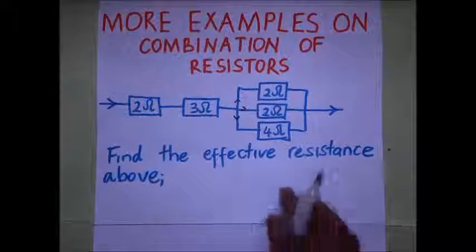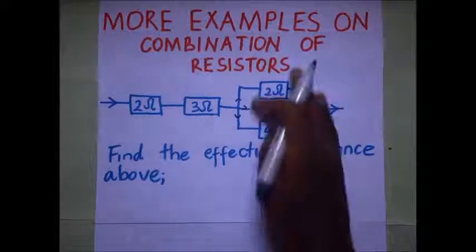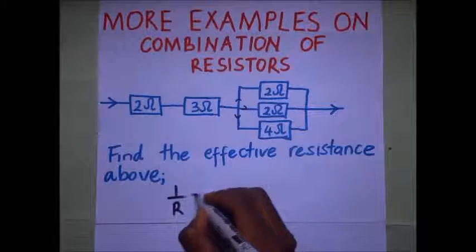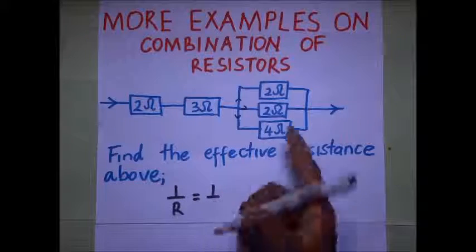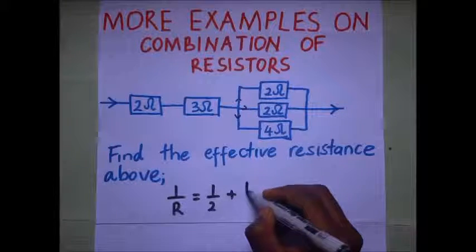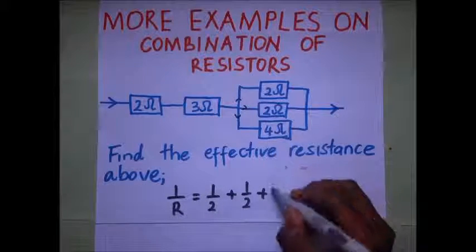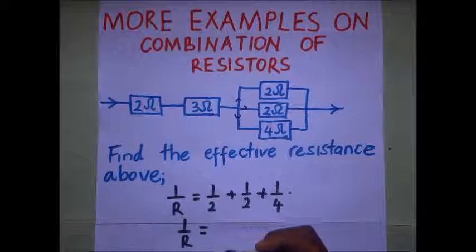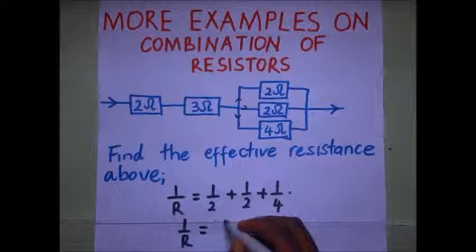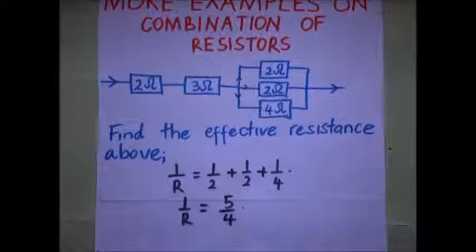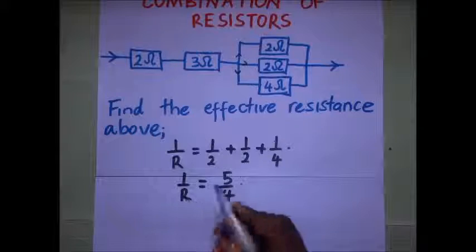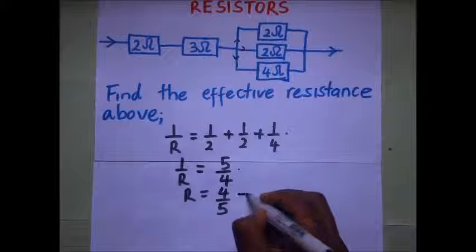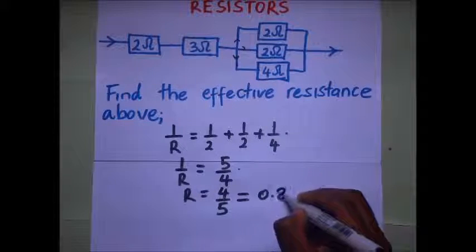So let's first get the effective resistance of that parallel combination. 1 over R is going to be equal to 1 over R1, which is 2, plus 1 over R2, which is 2, plus 1 over 4. We end up with 1 over R giving us 5 over 4. Cross-multiplying to make R the subject, we find R is equal to 4 over 5, which is 0.8 ohms.